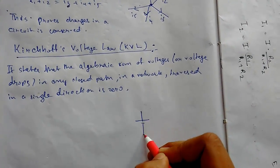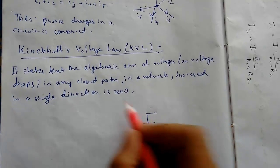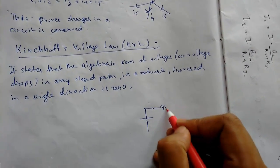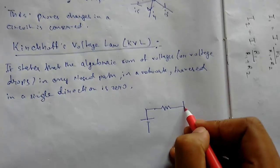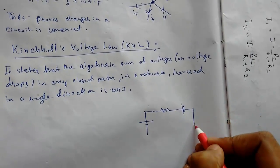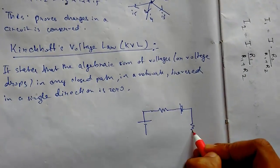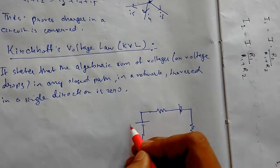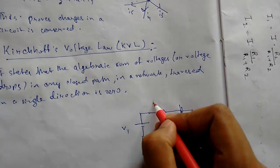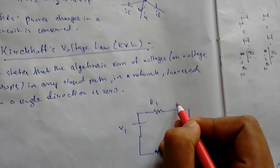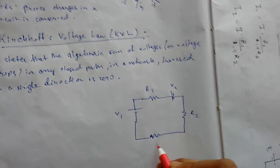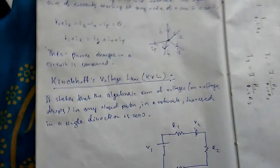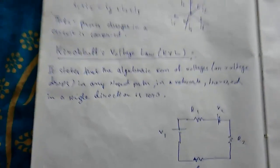To understand this, let me show you a circuit diagram. Suppose this is a closed circuit — a closed path means you have to consider a loop or a mesh. Let me take a simple circuit with V1, R1, V2, R2, and R3.